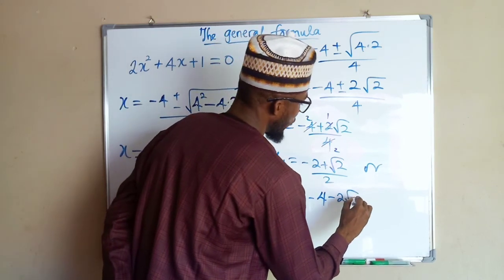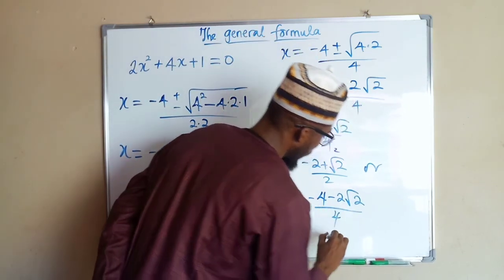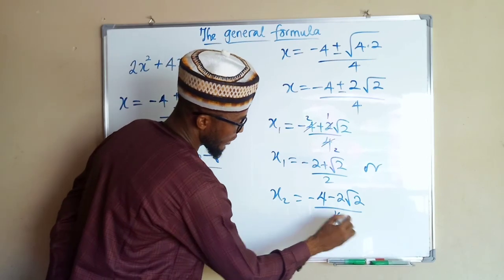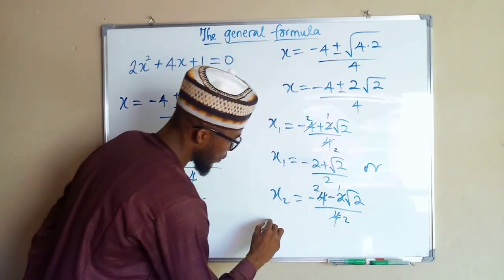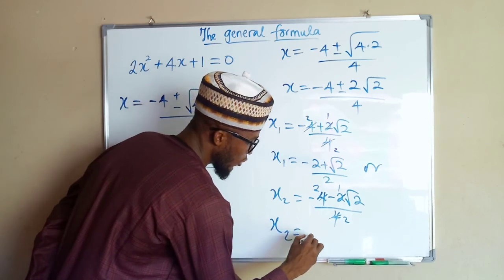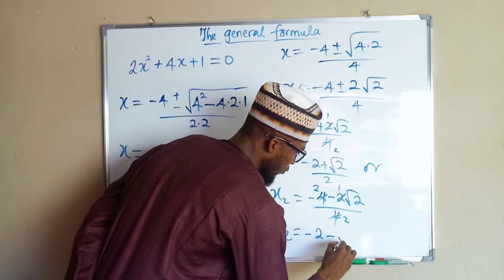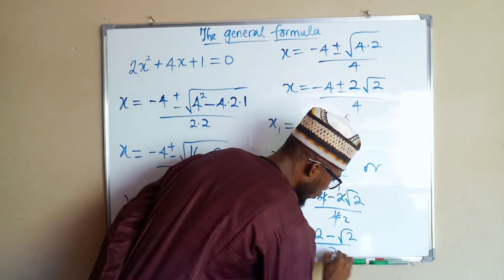Minus 2 root 2 over 4. 2 can go here 2 times, 2 can go here 2 times. So we will say x2 is now equal to negative 2 minus root 2 over 2.